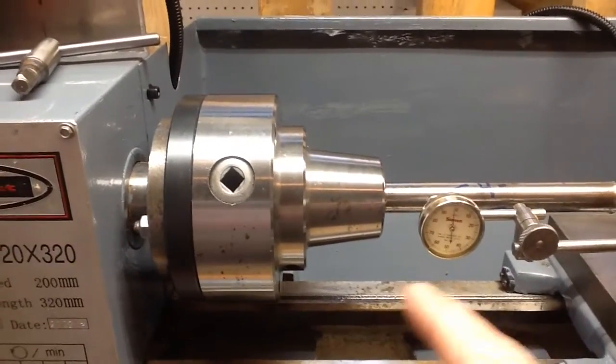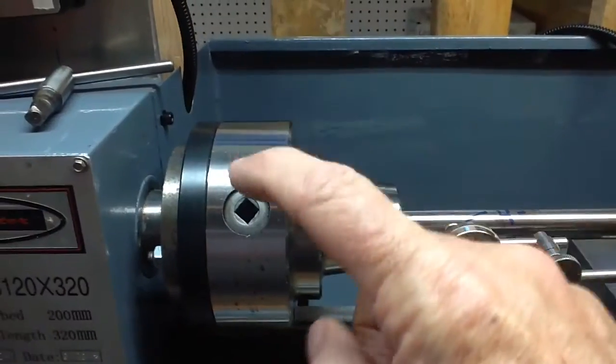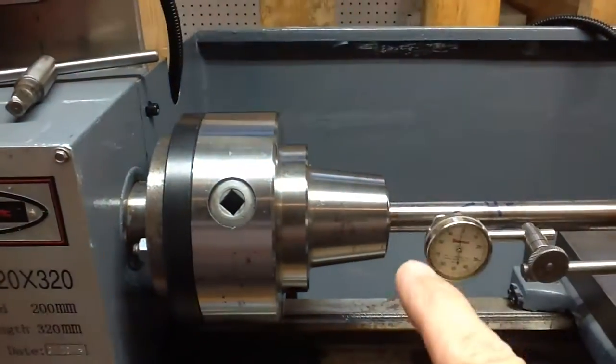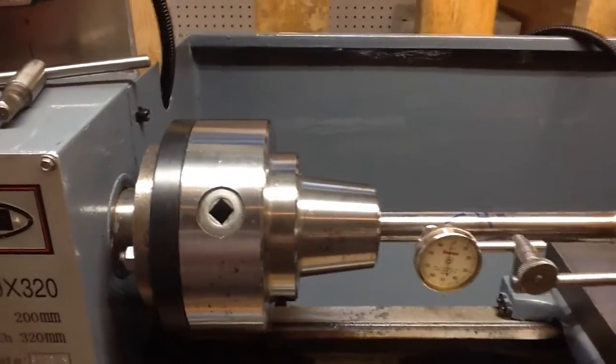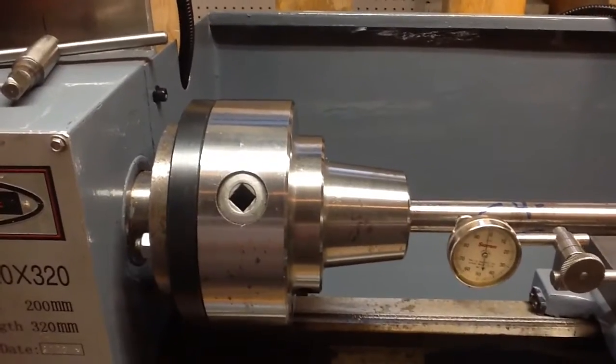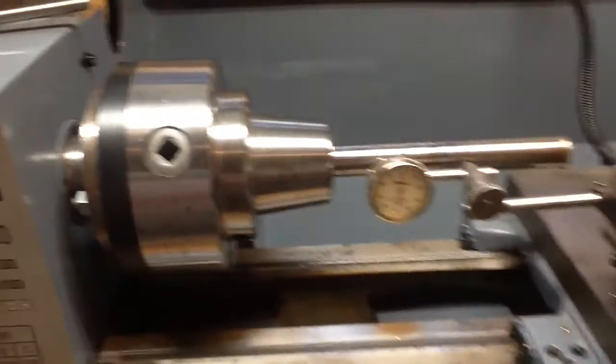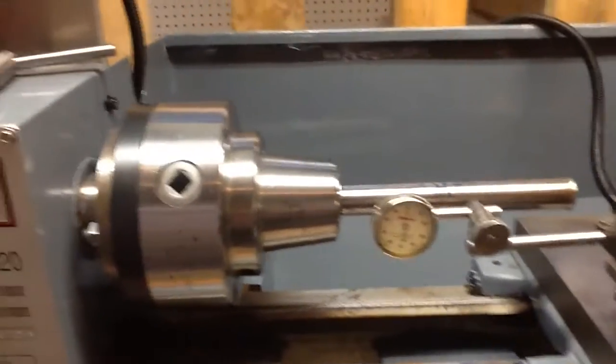They have one that's set-true that you can use set screws and loosen it up and align the 5C collet chuck just perfectly. Well, heck, I'll show you what I was doing here, but first let me explain the setup.